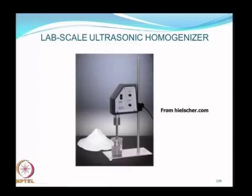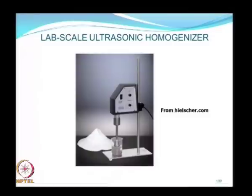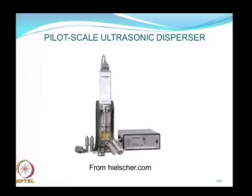There are various commercial equipment available to do size reduction using acoustic technology. At lab scale, ultrasonic homogenizers are widely used — these are essentially mixers, more used for the purpose of dispersion. When you have a nano suspension, one of the biggest challenges is to keep the particles dispersed in suspension. An ultrasonic homogenizer imparts a high-frequency acoustic field to the suspension, which constantly keeps it mixed and keeps the particles well segregated. At pilot scale, the same ultrasonic disperser can be used at a slightly larger scale, capable of processing liters per hour of suspension volume.